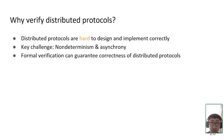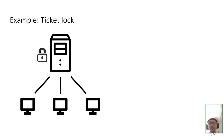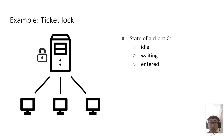Here we will use the ticket lock as a running example. Consider the scenario where a collection of clients try to access a shared resource on the server, protected by a ticket lock. Each client at any time is either idle, waiting for the lock, waiting for the log, or has entered a critical section.